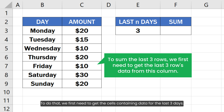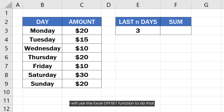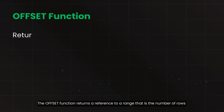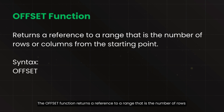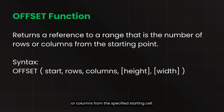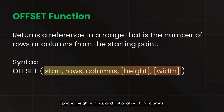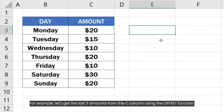To do that, we first need to get the cells containing data for the last three days. I will use the Excel OFFSET function to do that. The OFFSET function returns a reference to a range that is the number of rows or columns from the specified starting cell. This function accepts five arguments: a reference of the starting point, the number of rows to offset, the number of columns to offset, optional height in rows, and optional width in columns.